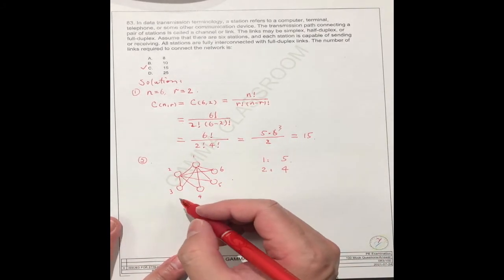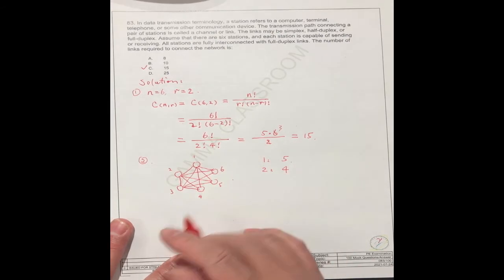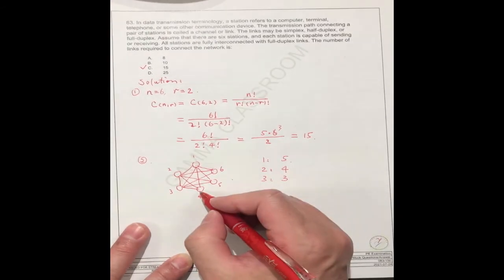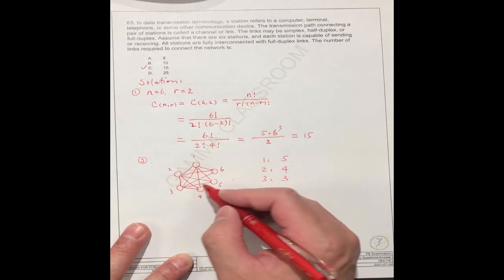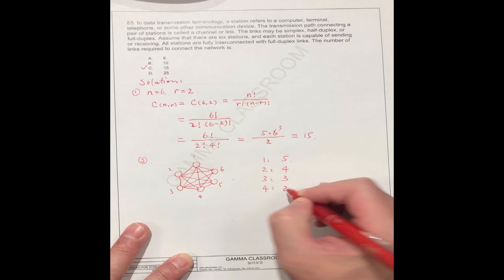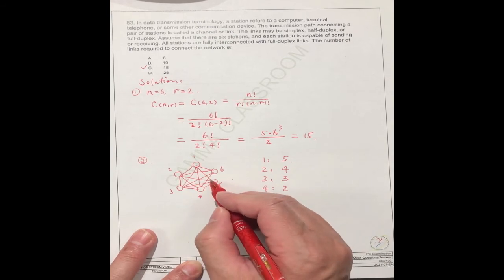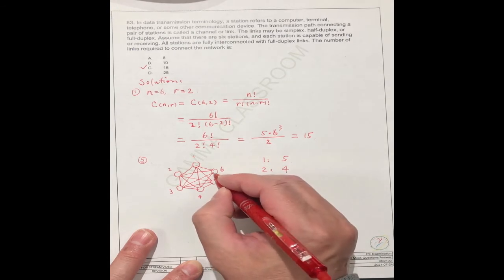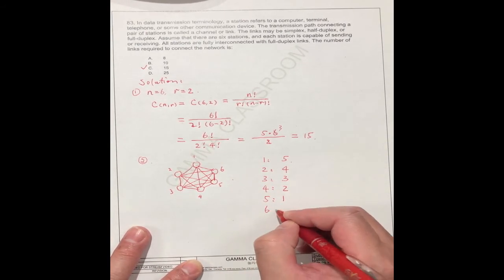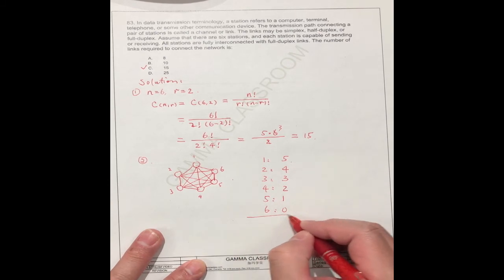Station 3 has three connections. Station 4, since 1, 2, 3 are already connected to 4, only needs 5 and 6, so station 4 has 2 connections. Station 5, since 1, 2, 3, 4 are already connecting, only has 6, so only 1 connection. Station 6 already connected to everyone, should be zero.